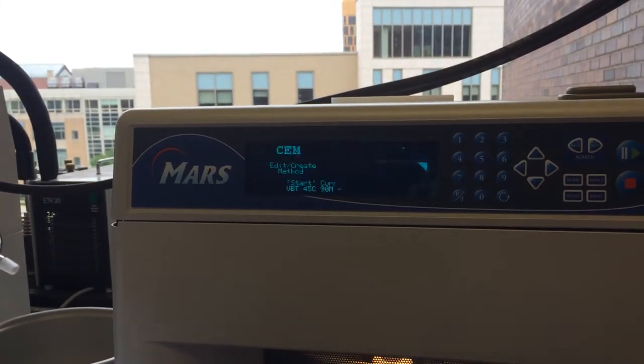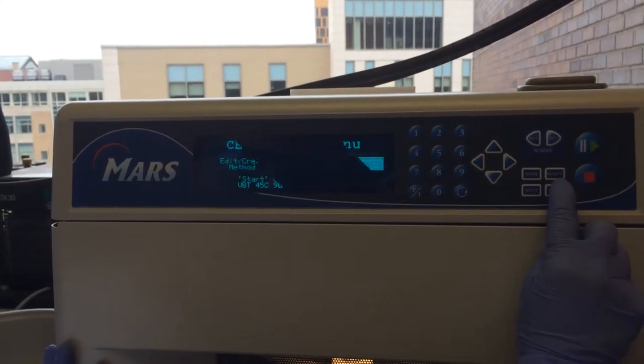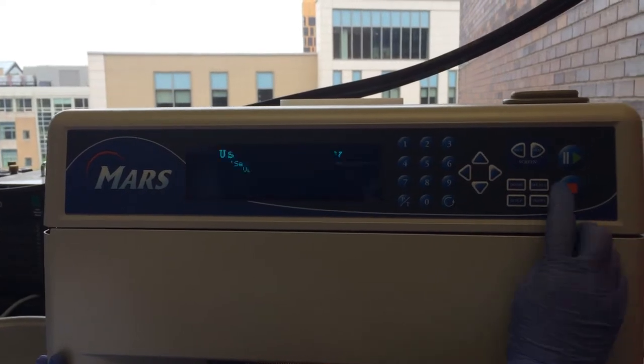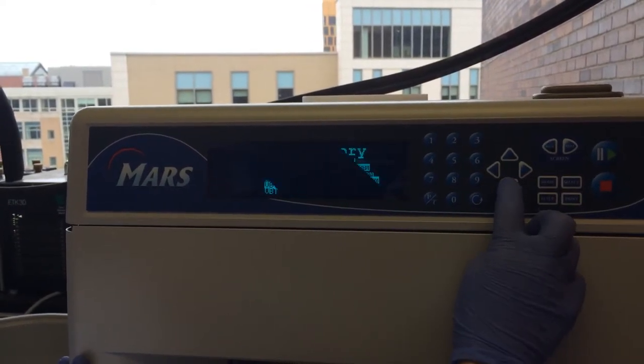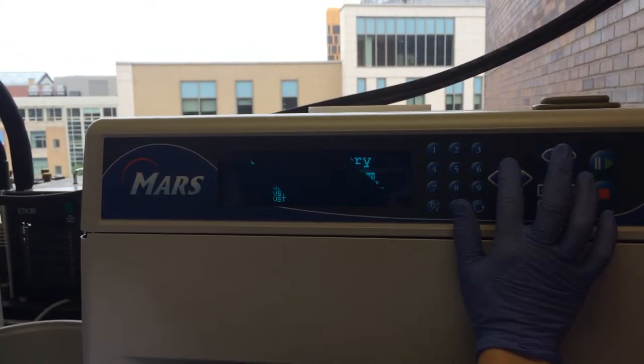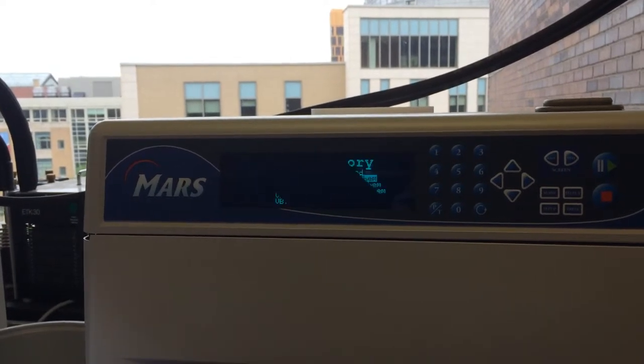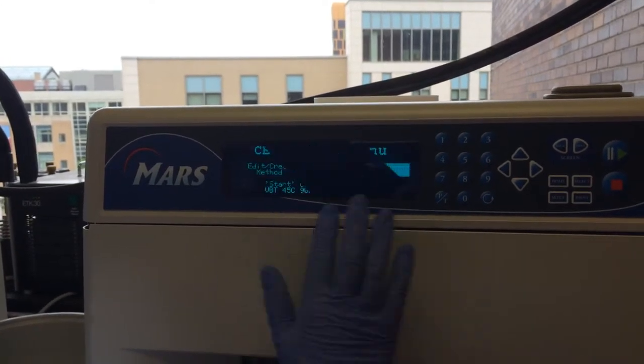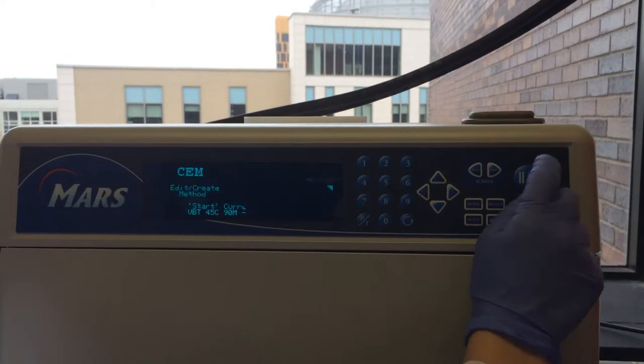In order to select a method, we have to go to load method. And you press this button here, select. User directory, select. And then you can use the up and down arrows to scroll through and choose a method. We are going to select 45 degrees Celsius at 90 minutes. And then you press select. And then when you get back to this screen, all you have to do is press the green triangle for play.